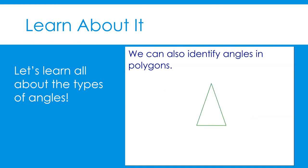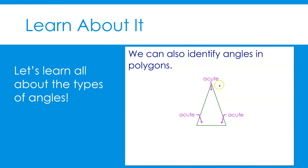Let's examine this triangle. It has three angles. If we create a right angle with the base of the triangle, you can see that the angle inside the triangle is open less than the right angle. Therefore, it is an acute angle. In fact, all of the angles in this triangle are acute, even though they do not all measure the same number of degrees. The angle at the top has a smaller measure than the other two — it is open or rotated less than the other two.